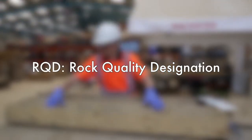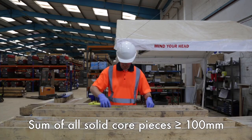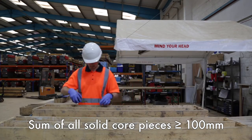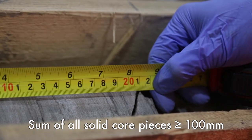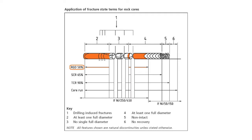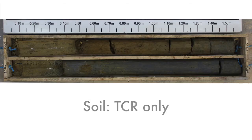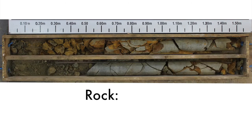The Rock Quality Designation, RQD, is defined as the sum of all solid core pieces that are greater than 100mm in length, expressed as a percentage of the core run length. Measurement of RQD applies to rock only. Where core is soil, record TCR only. Where core is rock, record TCR, SCR and RQD.